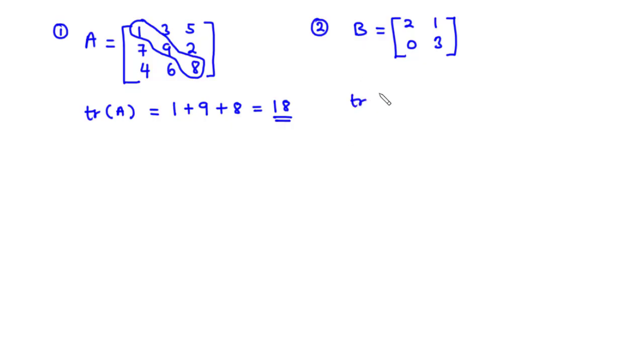So the trace of matrix B is equal to, let's add up the elements in the leading diagonal and that's equal to 2 plus 3 and that is equal to 5. Therefore the trace of matrix B is equal to 5.